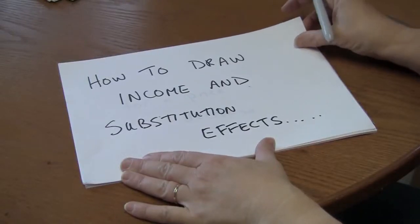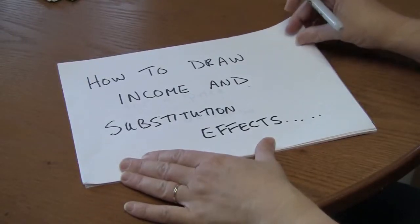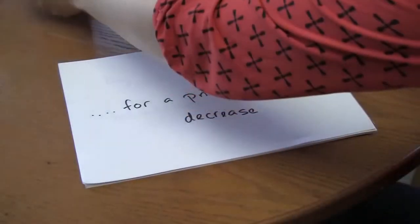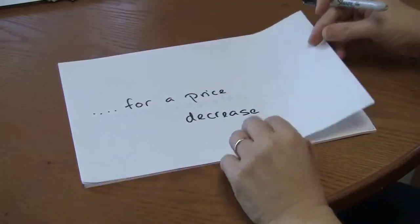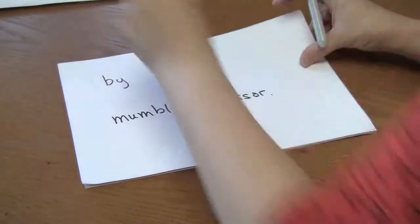This video shows how to draw income and substitution effects for a price decrease, and I'm Mumbling Professor.